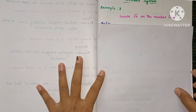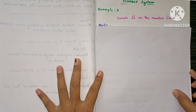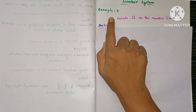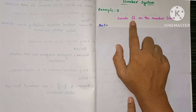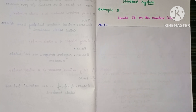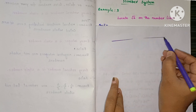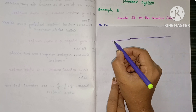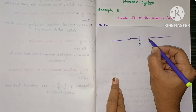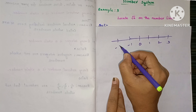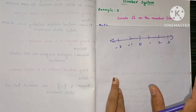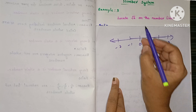Hello students, welcome to my channel. Today in this video we are going to see example 3 from the first chapter, Number System of ninth class — how to locate root 2 on the number line. You will draw a number line with 0 in the middle, positive numbers on the right side and negative numbers on the left side.